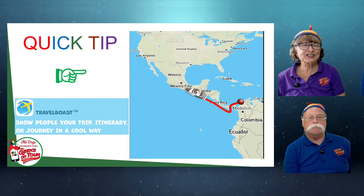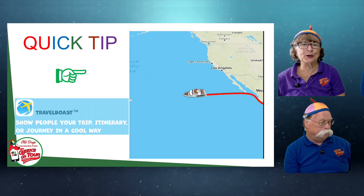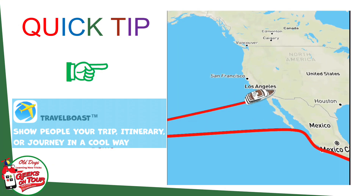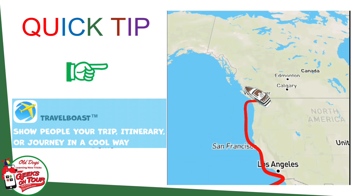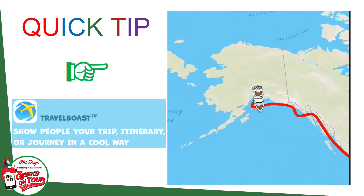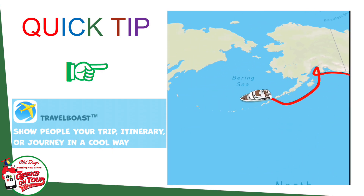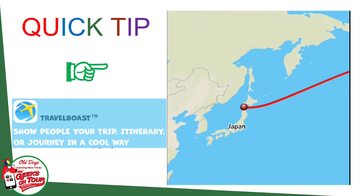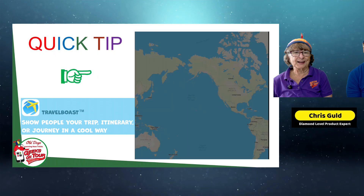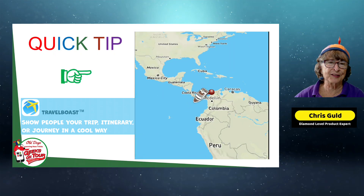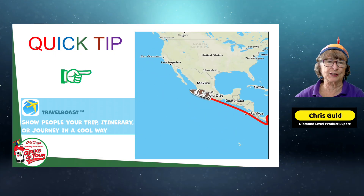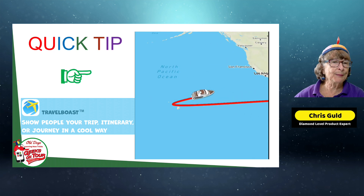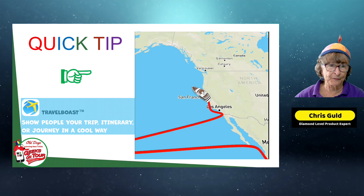Chris has a quick tip. Check out this little video playing on the screen right now — isn't that cute? It's showing our journey so far: we started in South America, went all the way up the West Coast, over to Hawaii and back, and then to Japan. I love this little animation with the cute little boat.